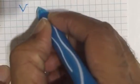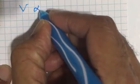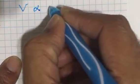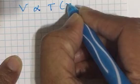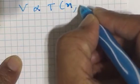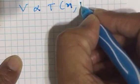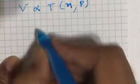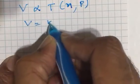According to Charles, the volume of a given mass of a gas at constant pressure is directly proportional to temperature. This n represents fixed mass and this P represents constant pressure. V equals K2T.